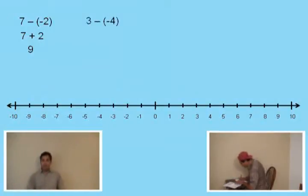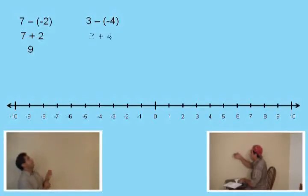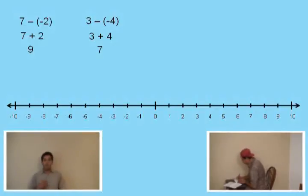Okay, let's try 3 subtract negative 4. 3 plus 4. That's right. The same as 3 plus 4. Which is? 7. 7. Very good Charlie. Okay.